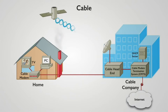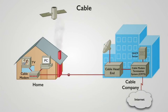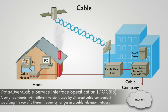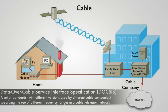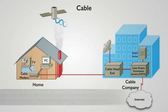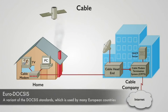Different frequency ranges are used for data transmission and reception, and there are specifications that define what frequencies can be used. These specifications are called DOCSIS versions — Data Over Cable Service Interface Specification. Different countries may have their own flavor of DOCSIS; for example, many European countries have their own set of frequency ranges defined in a standard known as EuroDOCSIS.